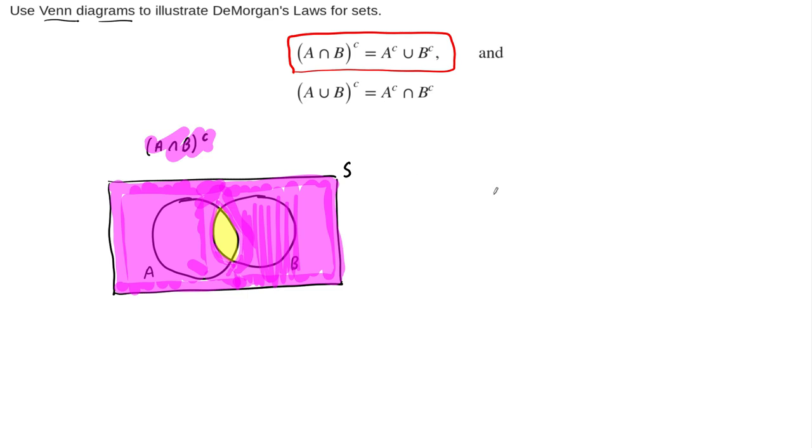Now the second, the other side of this, is a little bit more work to construct because we first have to take a couple of complements and then take their union. So again we have our universal set, which I usually call S. Sometimes it's called U for universal. And then we have our two sets A and B.